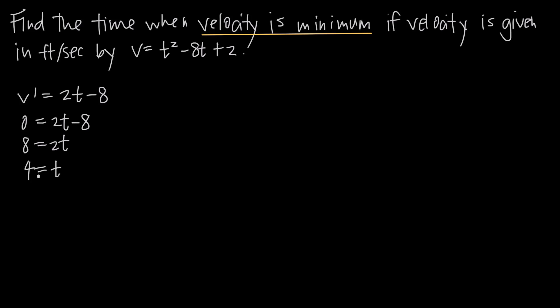A critical point is the point at which a function can change direction from increasing to decreasing, or from decreasing to increasing, which means that point is an extreme of the function — it's a minimum or a maximum. Because we've only found one critical point, this is probably the point at which velocity is minimum, but we need to prove it using the first derivative test.